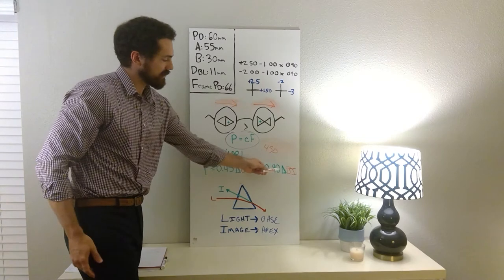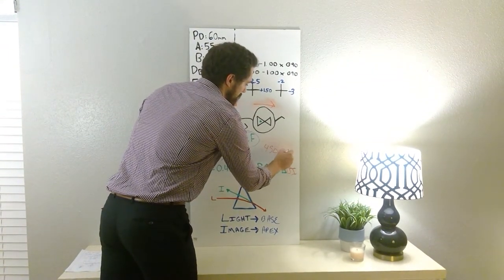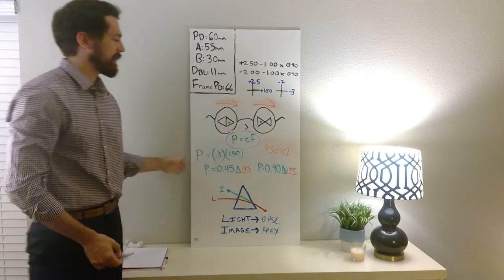For the direction, use the larger number for the direction. So it's going to be base in. 0.45 prism diopters base in is the total prismatic demand, right? Very good.